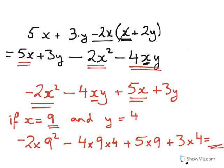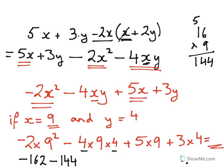Well, 9 squared is 81. And we multiply that by minus 2, giving us minus 162. 4 4's are 16. 16 times 9, we can work out. 9 times 6 is 54. 9 times 1 is 9, plus 5 is 14. So, we get minus 144. Plus 5 9's, 45. Plus 3 4's, 12.